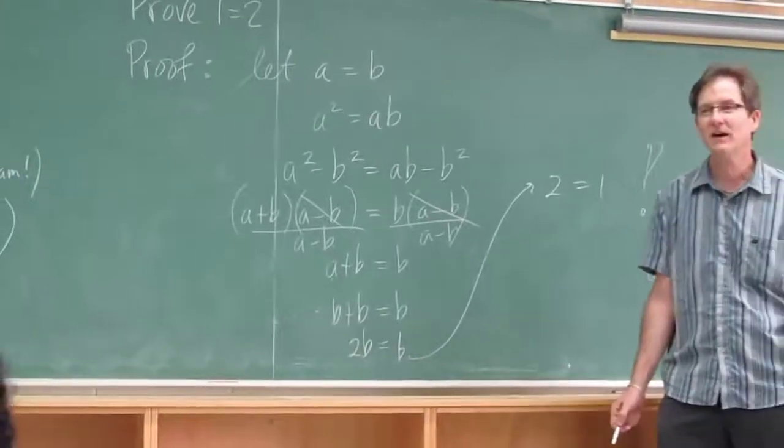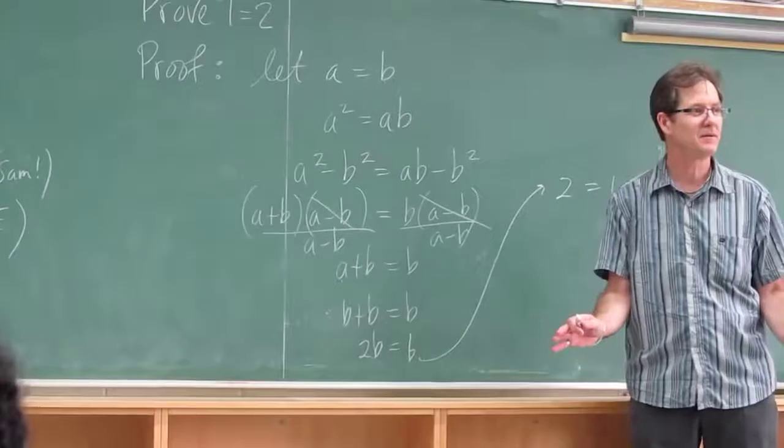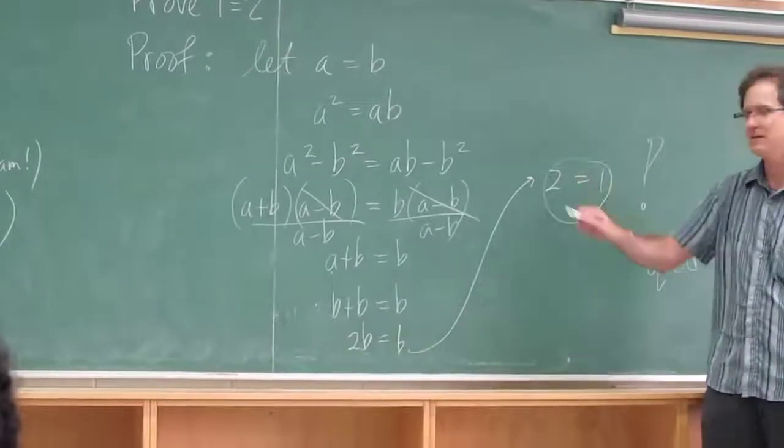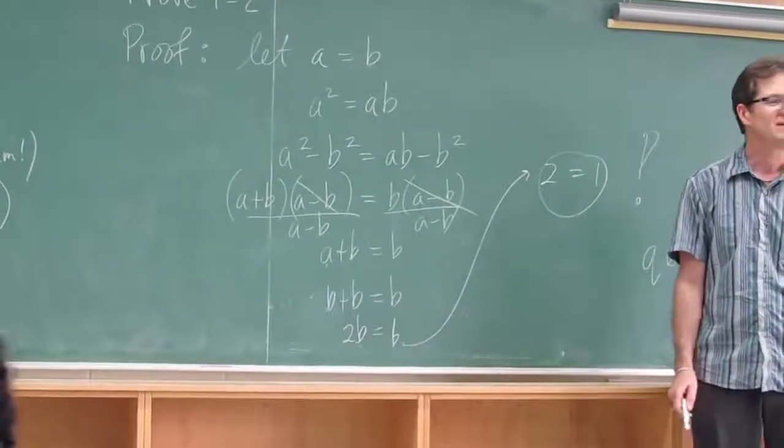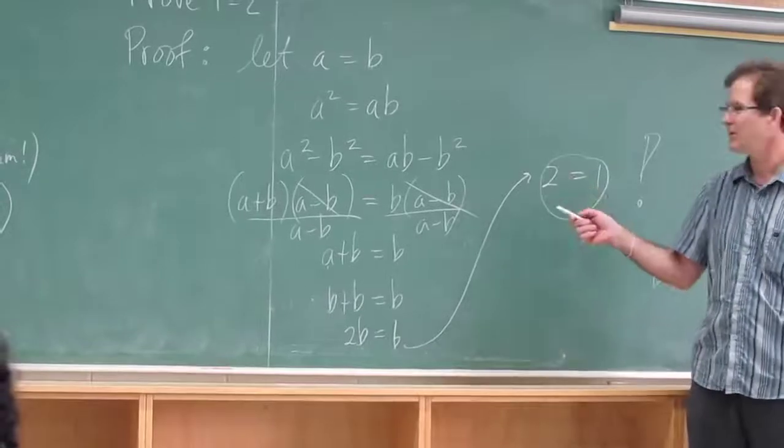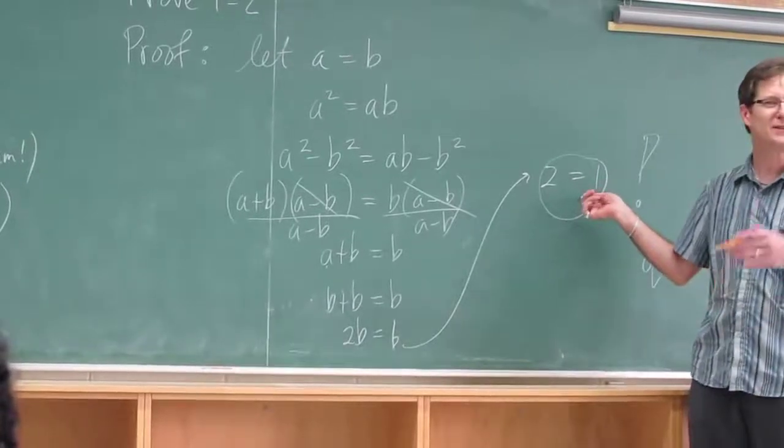When you divide by 0, all sorts of weird things can happen. You can prove all sorts of interesting things when you divide by 0. So don't divide by 0 or you'll end up proving this, and then nothing in the universe will make sense.